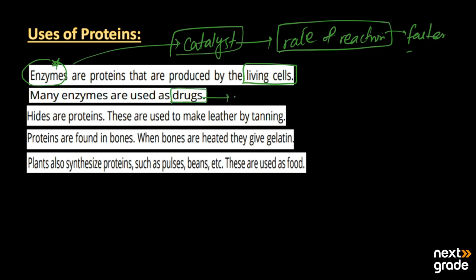Many enzymes are also used as drugs, so they are proteins used in medicine. Proteases are proteins used to make leather by the tanning process, so leather is also produced using proteins. On the other hand, proteins are also found in the bones of living organisms, and when bones are heated they give a jelly-like material known as gelatin, which can be used in bakery products.